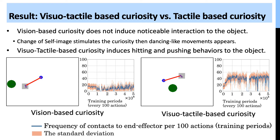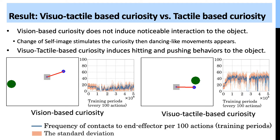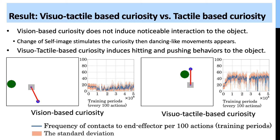This is the result comparing vision-based curiosity and visual-tactile-based curiosity. You can see that vision-based curiosity does not induce noticeable interaction with the object, while visual-tactile-based curiosity does induce interaction with the object. Change of self-image stimulates the vision-based curiosity, and a dancing-like movement appears.